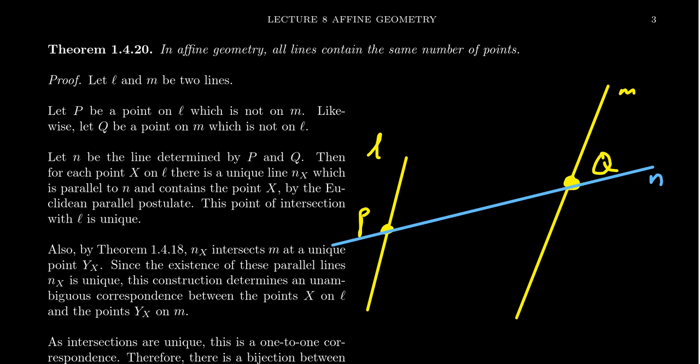Then for each point X on L — and I write this as X because I want you to think of it as a variable, since we don't know how many points there could be on L — consider any point on L. In four-point geometry there are only two, in Young's there are three, in Euclidean geometry uncountably many, but these are all affine geometries.